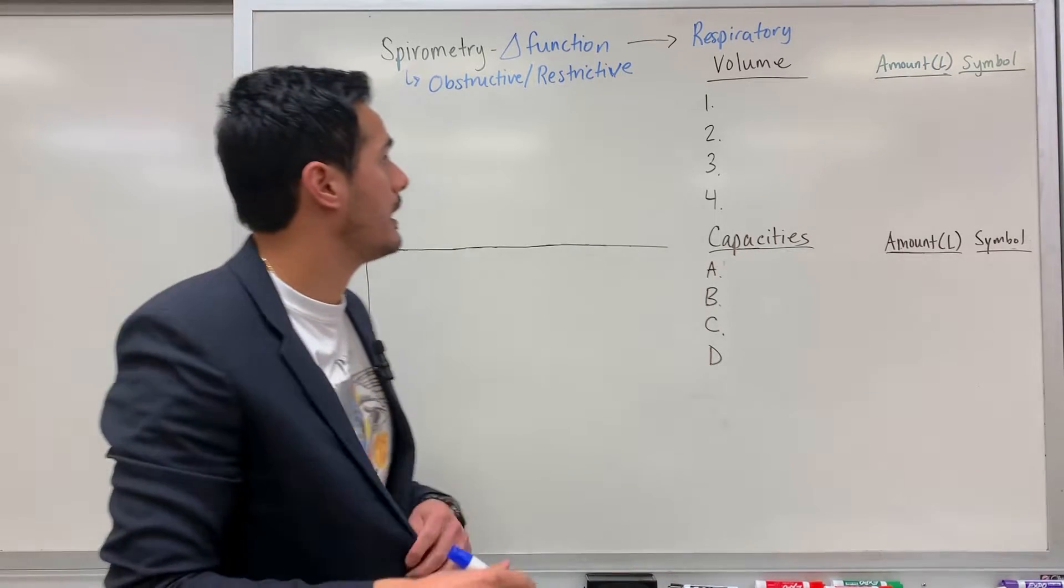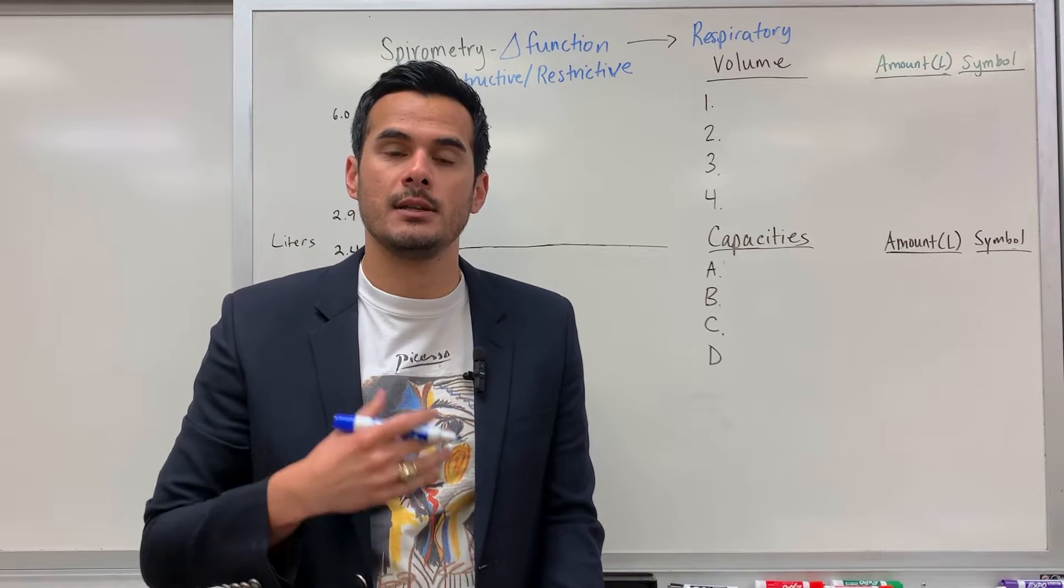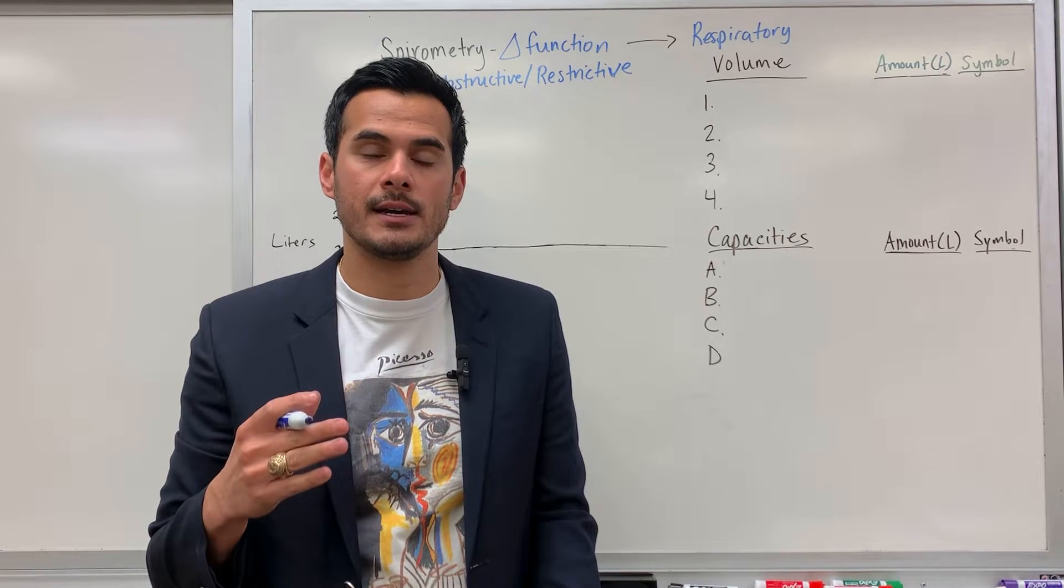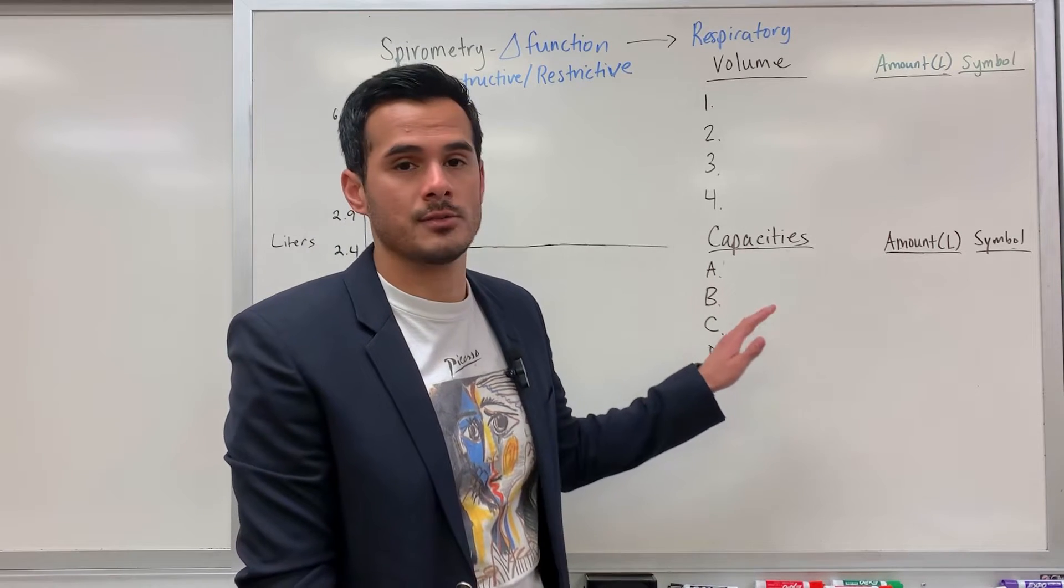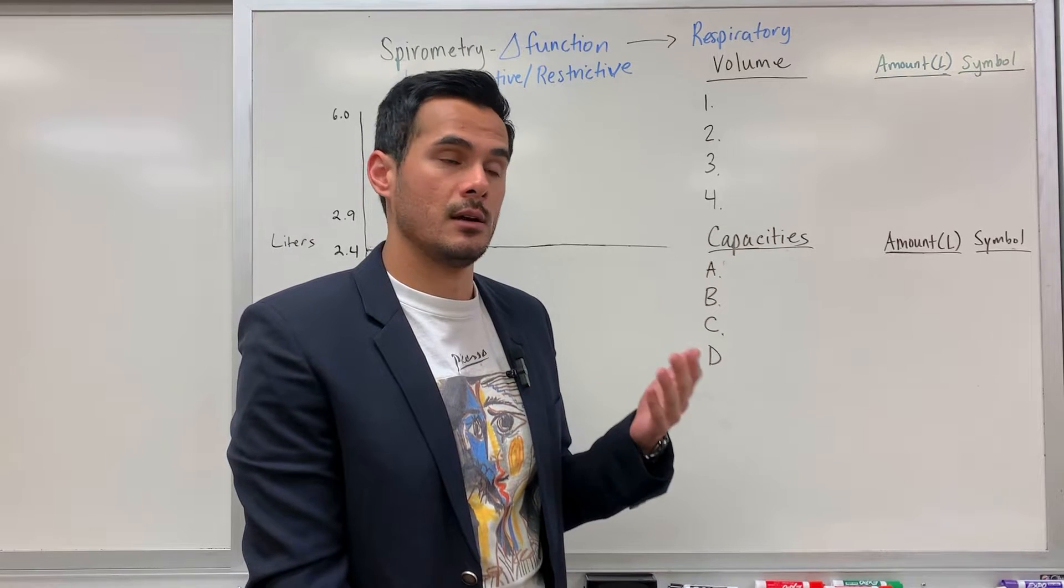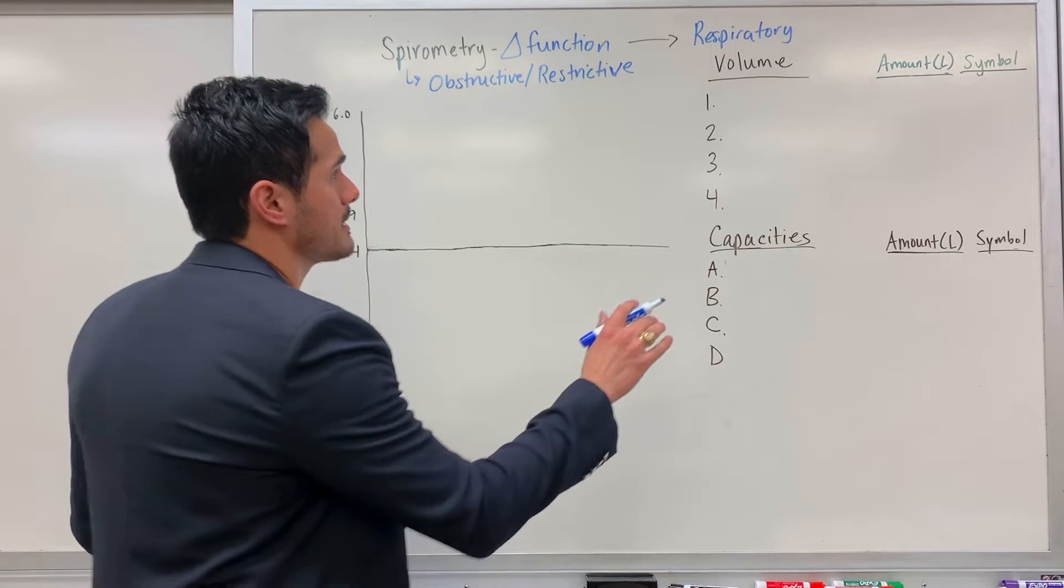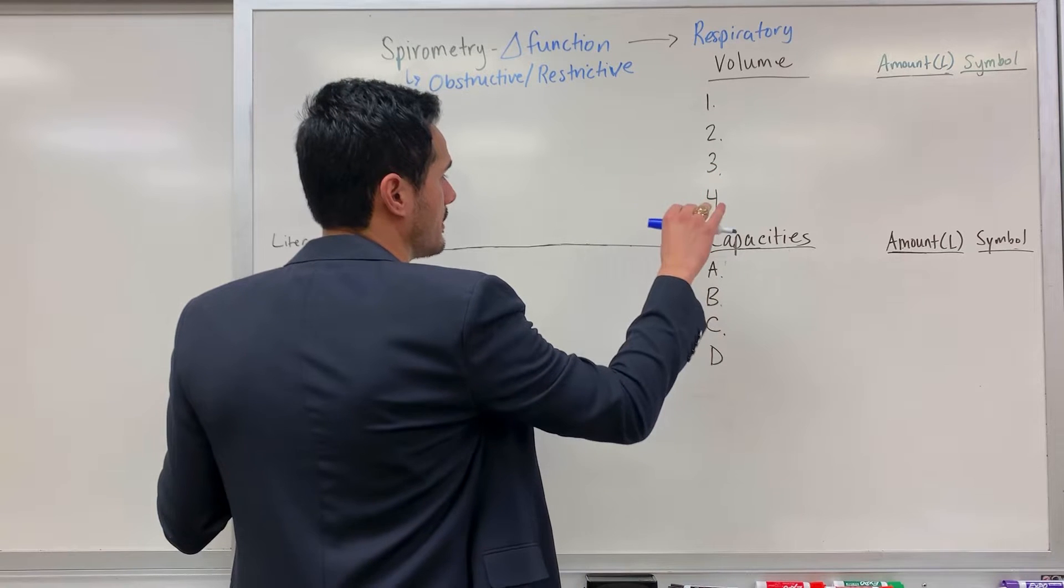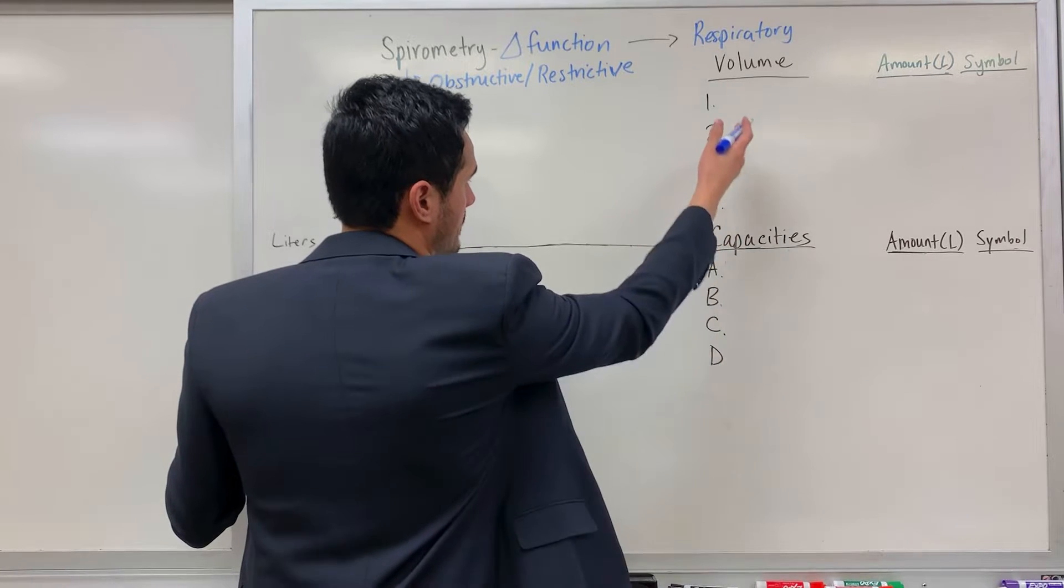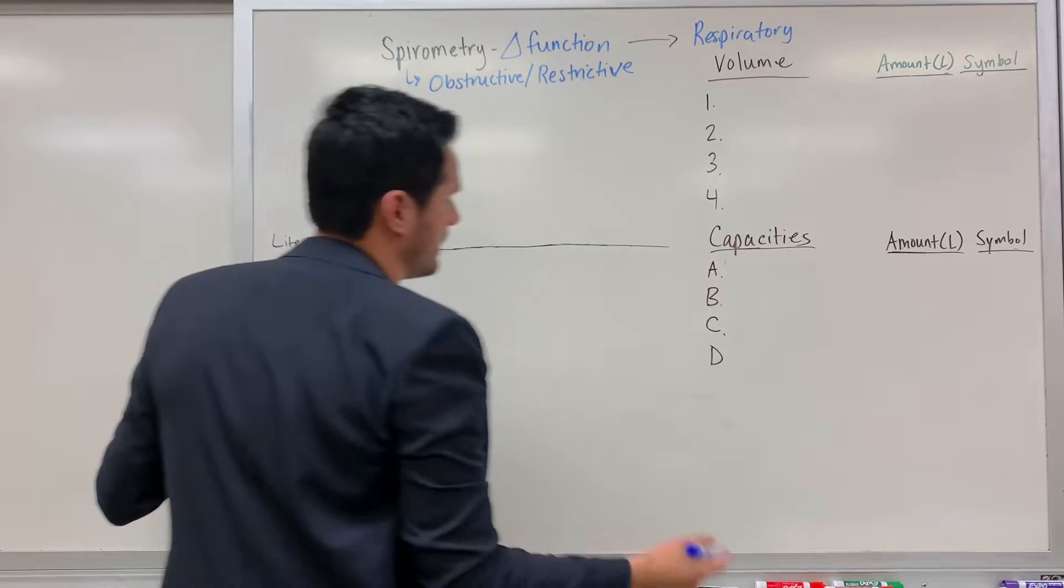The spirometer is used and what the subject will do is they'll breathe normally, then forcefully inhale, forcefully exhale, and we can collect data on those values. So the certain volumes of air that they were able to breathe in as well as breathe out. We're going to discuss those different terms we use for the different volumes and the respiratory capacities, where we're just adding some of these different values to determine the amount.